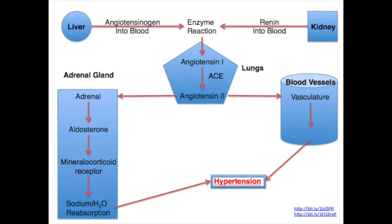To understand how angiotensin-converting enzyme inhibitors work, we must discuss the renin-angiotensin-aldosterone system. The system pathway begins as the liver releases angiotensinogen into the blood. The kidney then responds by releasing the enzyme renin into the blood to break down angiotensinogen. Angiotensin-1 is a 10-amino acid oligomer that is then transported throughout the bloodstream into the veins of the lung, where it is broken down by angiotensin-converting enzyme, or ACE, to the 8-amino acid octamer angiotensin-2.